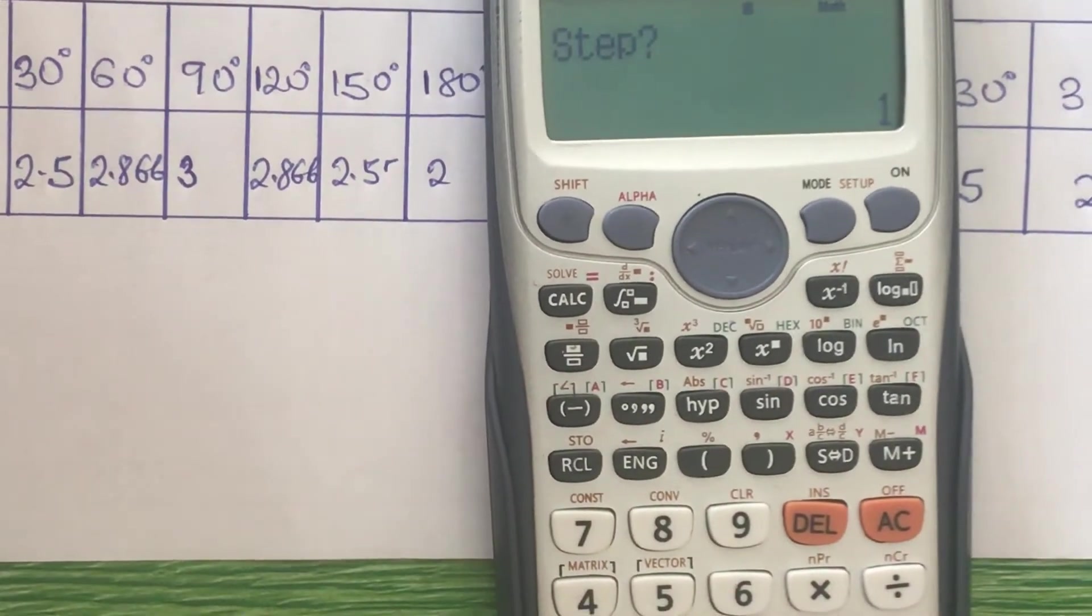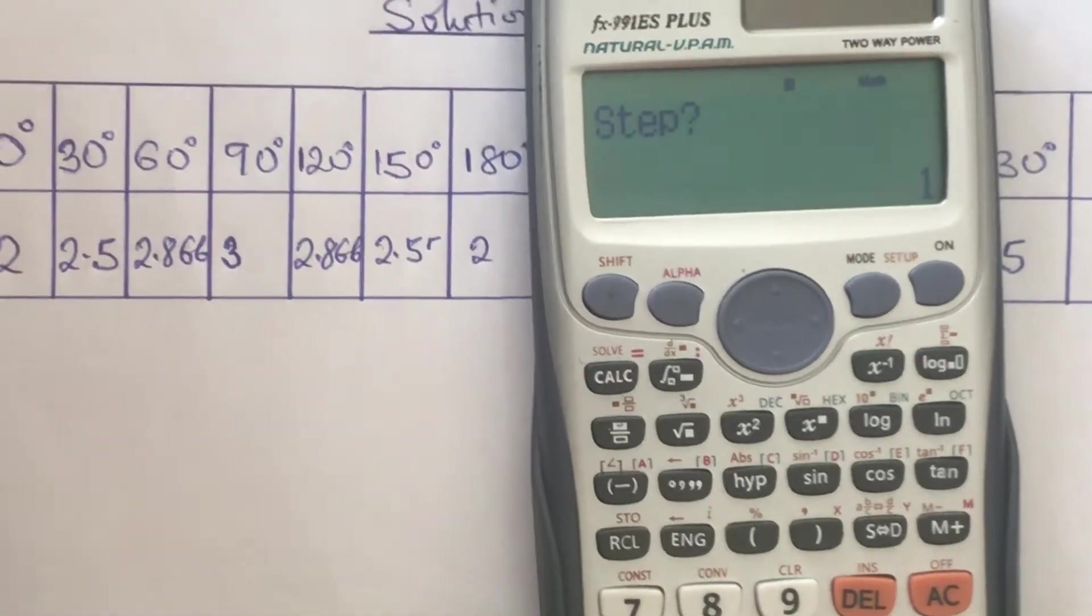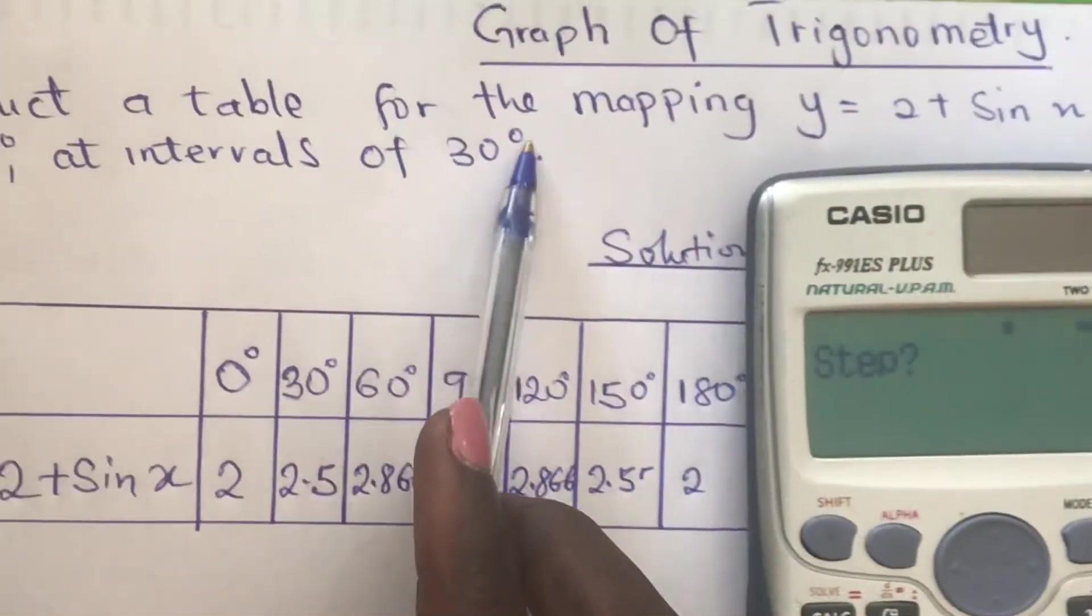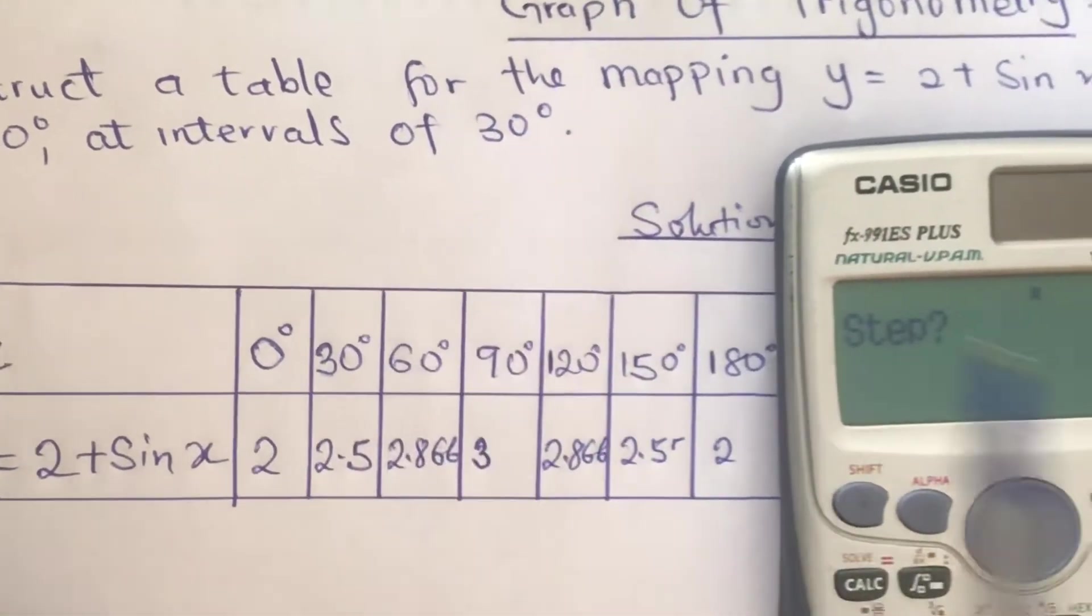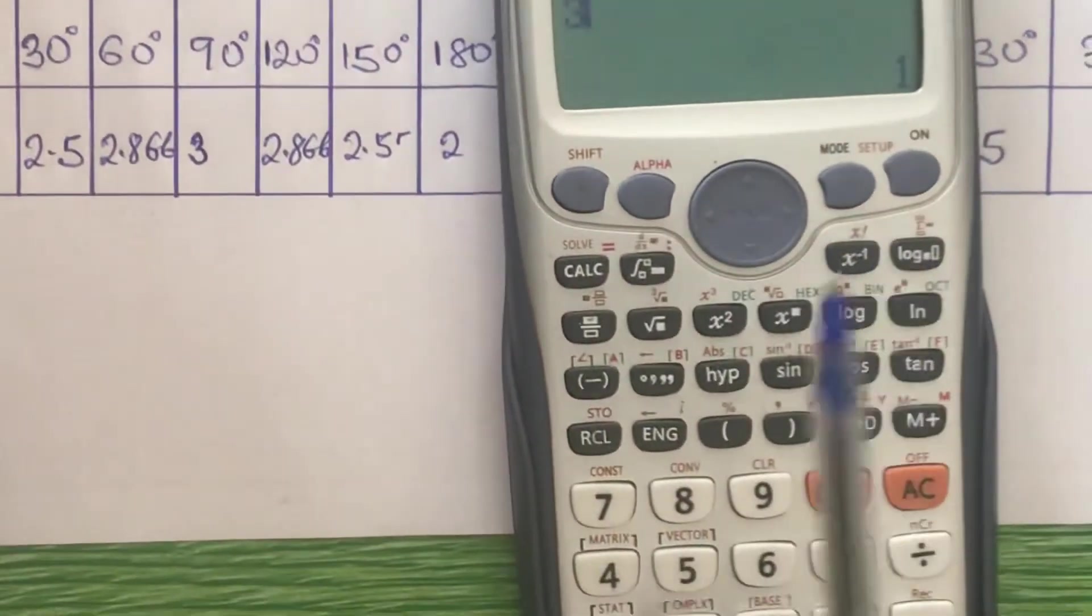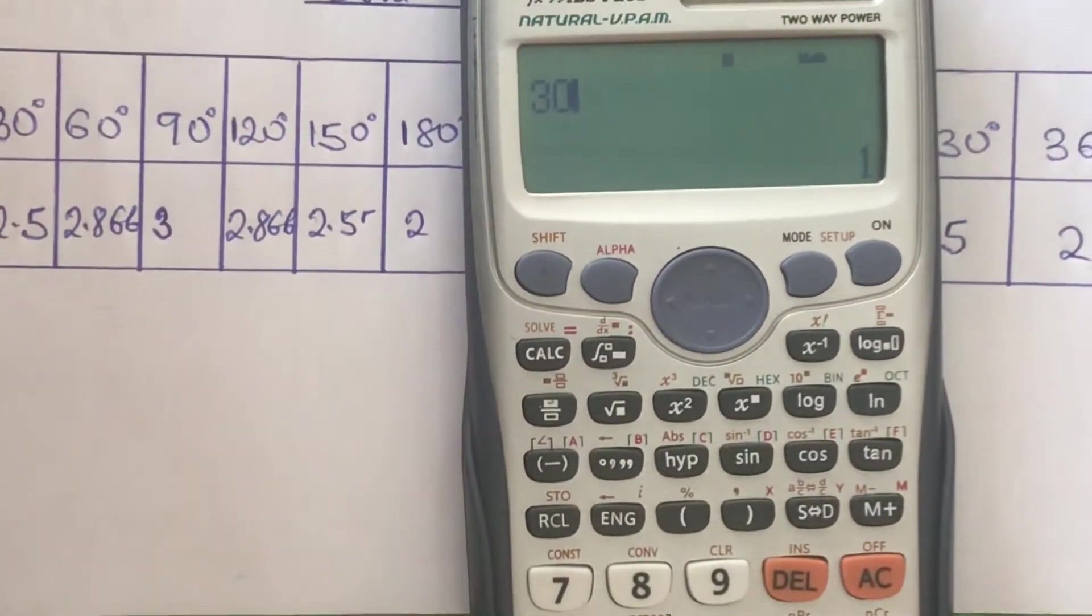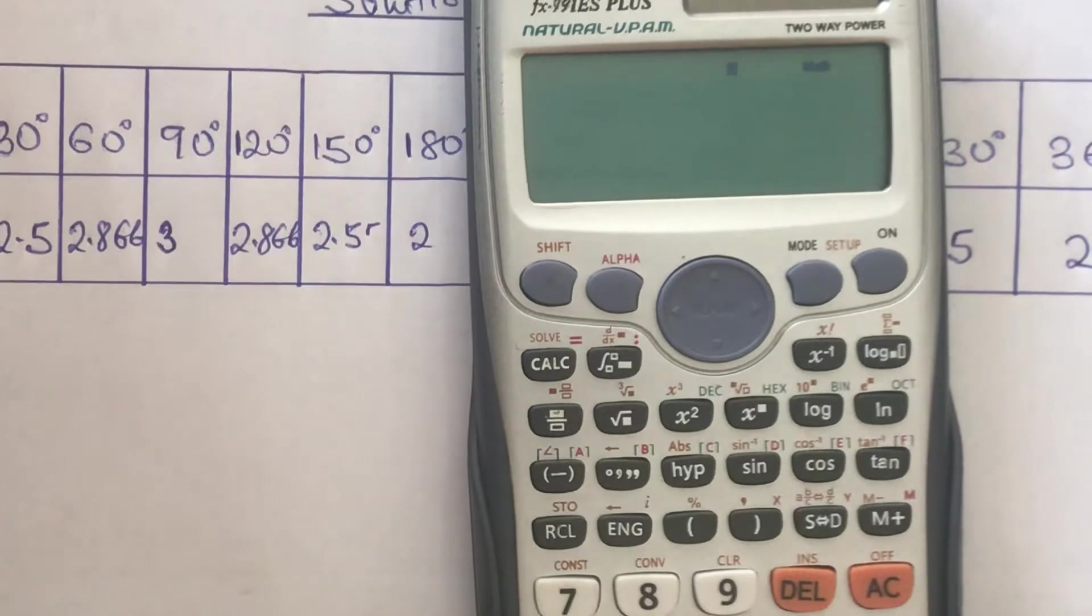Which interval are we using? We are using interval of 30 degrees, so we have to press 30 as instructed. Then we press on equal to.